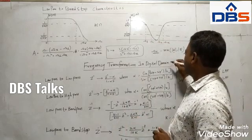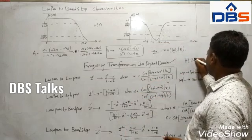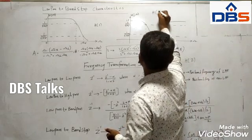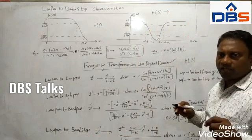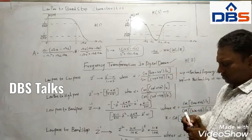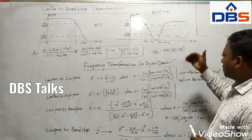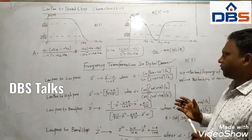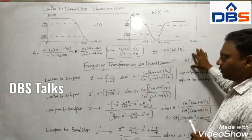Now we will see frequency transformation in the digital domain. In the digital domain we have to operate on H(z). Whereas in the analog domain, frequency transformation operates on H(s) — H(s) is given and in the place of s we substitute different parameters such as s divided by omega_c or omega_c divided by s. Now for frequency transformation in the digital domain, the transfer function is in Z.